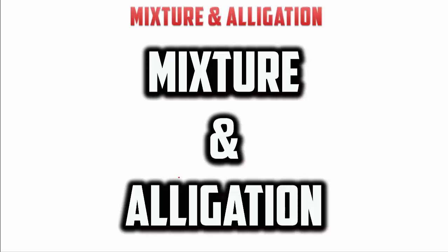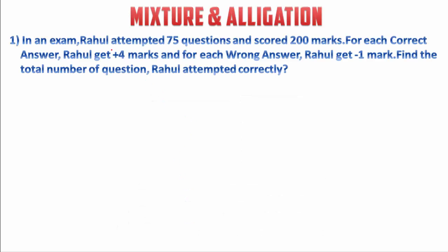Hello friends, welcome again. As promised, today we will discuss a few more important questions on mixture and alligation. First question: in an exam, Rahul attempted 75 questions and scored 200 marks. For each correct answer Rahul gets 4 marks, and for each wrong answer he gets minus 1 mark. Find the total number of questions Rahul attempted correctly.